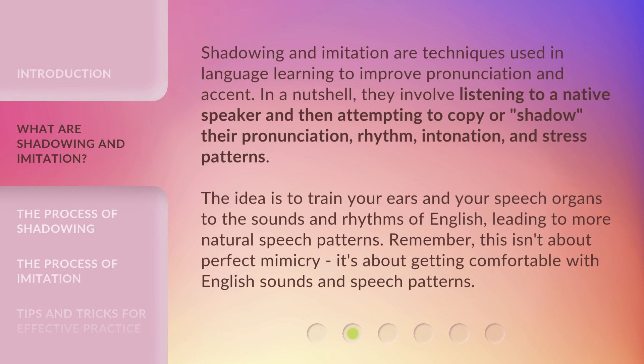Shadowing and imitation are techniques used in language learning to improve pronunciation and accent. In a nutshell, they involve listening to a native speaker and then attempting to copy, or shadow, their pronunciation, rhythm, intonation, and stress patterns. The idea is to train your ears and your speech organs to the sounds and rhythms of English, leading to more natural speech patterns.